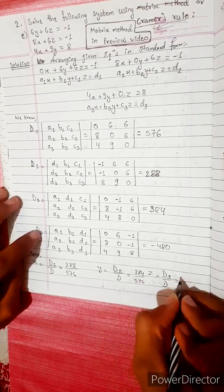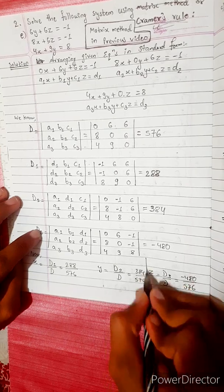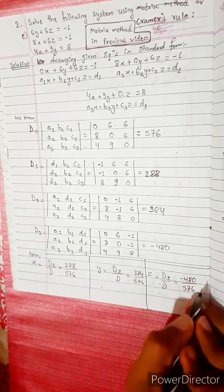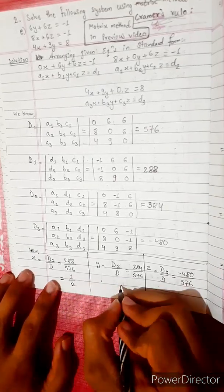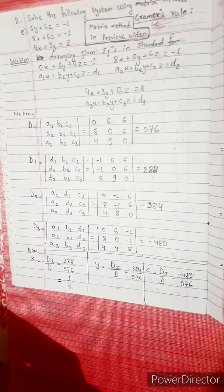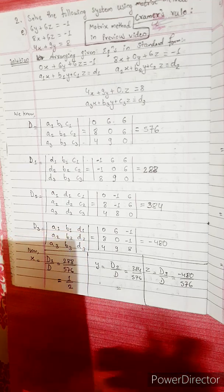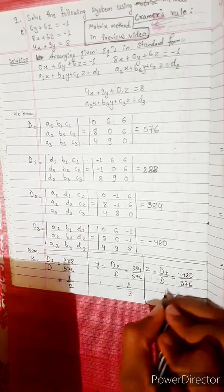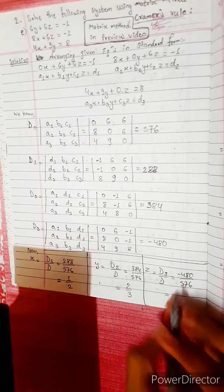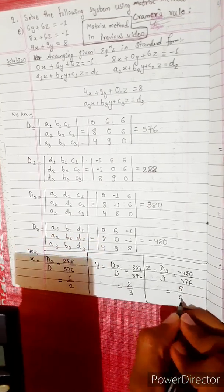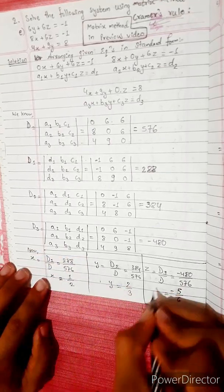D1 is 384 divided by 576, which simplifies to 2 divided by 3. D3 is 480 divided by 576, which simplifies to 5 divided by 6. The first answer gives x equals 1 by 2, y equals 2 by 3, and z equals 5 by 6.